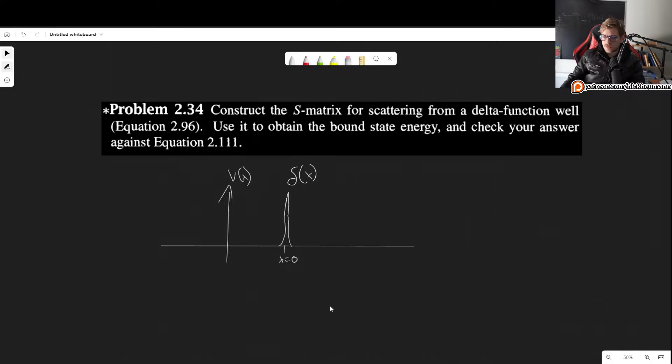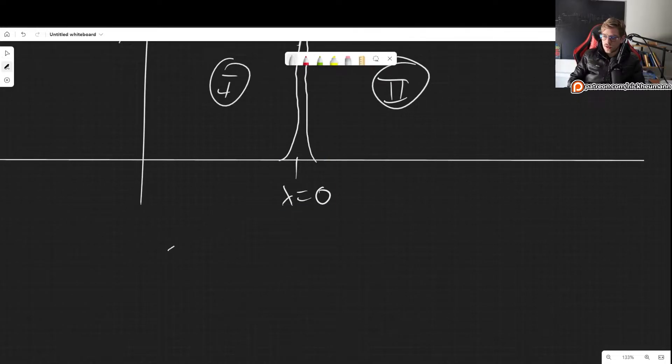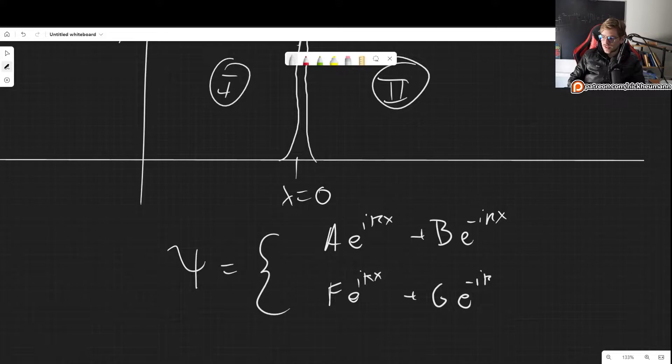And we have done this before, of course, but we know that in region 1, so if this is region 1 and this is region 2, we know that the wave functions are going to be of the form Ae^(ikx) + Be^(-ikx). And we also have, let's name them F just for consistency, Fe^(ikx).